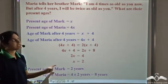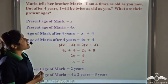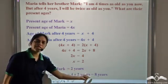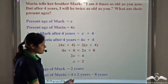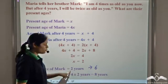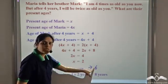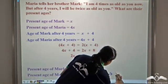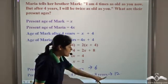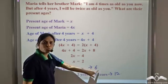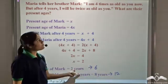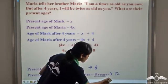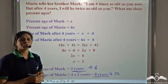Let us check whether these values satisfy the conditions. Maria is 4 times as old as Mark now: 8 = 4 × 2 ✓. After 4 years, Mark will be 2 + 4 = 6 years old, and Maria will be 8 + 4 = 12 years old. Since 6 × 2 = 12, Maria will indeed be twice as old as Mark after 4 years ✓. These are the correct values which satisfy all the conditions given in the problem.